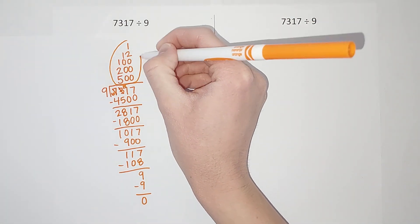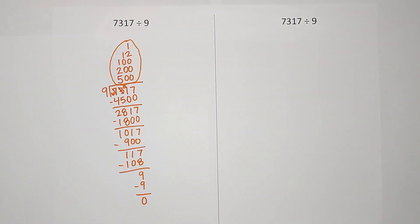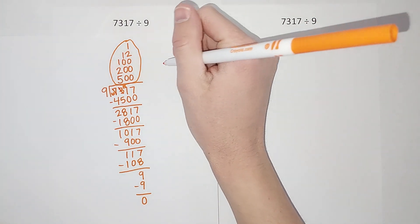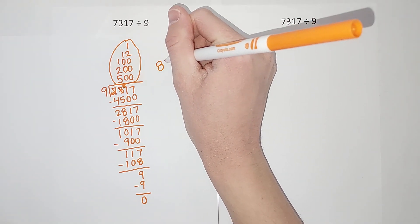Now all you have to do is add up all these numbers up here, or along the side if you did it that way. When I add all those up I get 813.